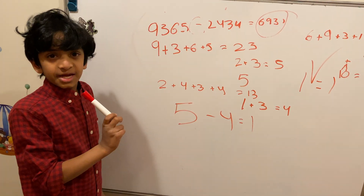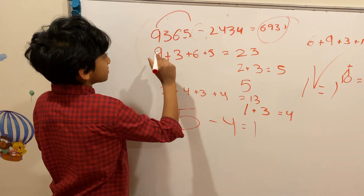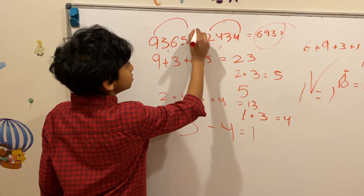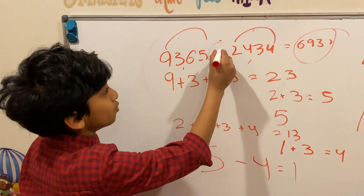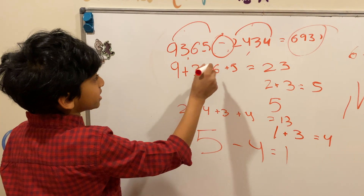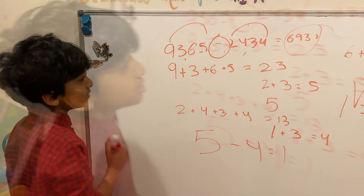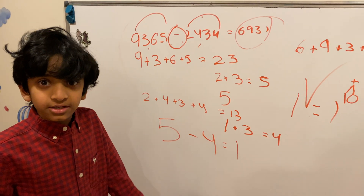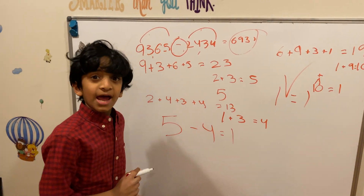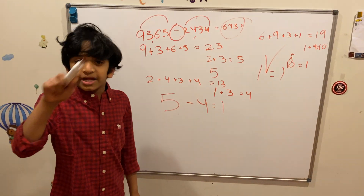It looks like a lot of steps, but the trick is pretty simple. Add all the numbers on each part and make it a single digit number. Use the operation you have, do the calculation, and then get your answer. Do the same thing on the right side, get the single digit, and check if the left side equals the right side. If they're equal, the answer is correct. If they're not equal, the answer is wrong.